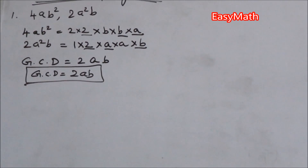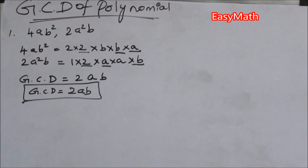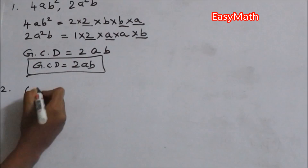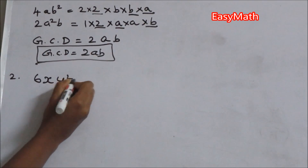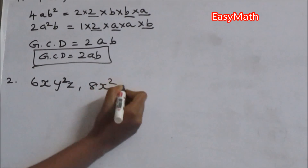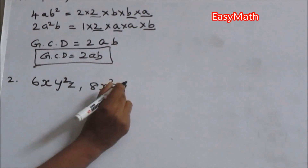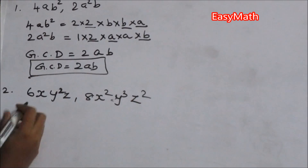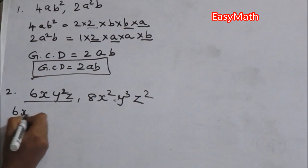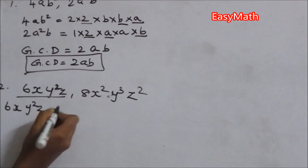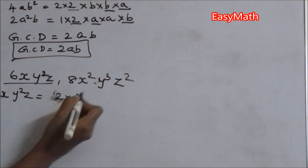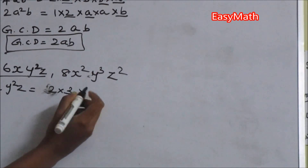The next problem: find the GCD of 6xy²z and 8x²y³z². We expand 6xy²z as 2 × 3 × y × y × x × z.